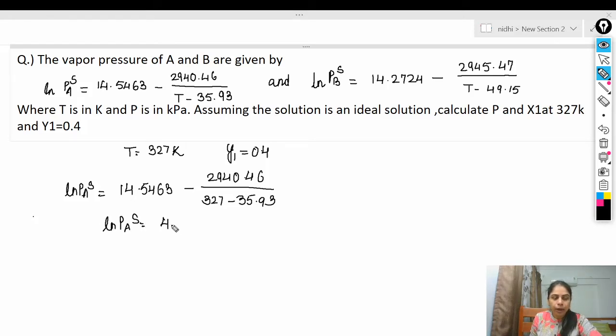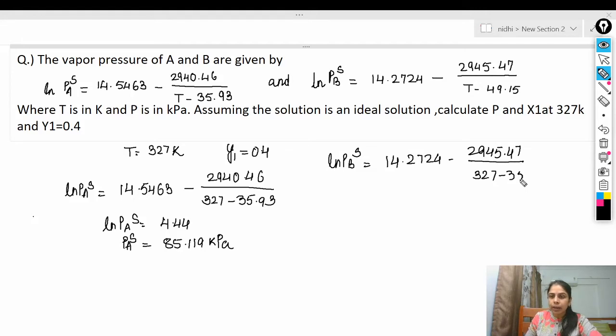So ln(P_A^s) is 4.44, and then take the antilog so you will get 85.119 kilopascal. Similarly, you can substitute here also so you will get P_B^s = 14.2724 - 2945.47/(327 - 35.93). When you solve this you will get ln(P_B^s) = 3.671.